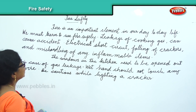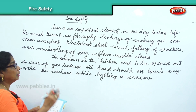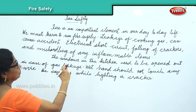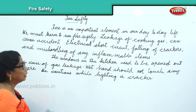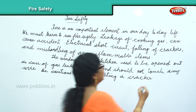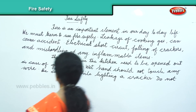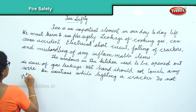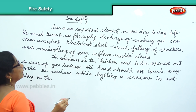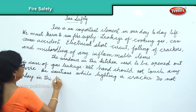The last precaution: do not play in the kitchen. There is gas there, there are wires, short circuit risk, crackers, and other inflammable items. Children should not play in the kitchen — that will keep you safe.